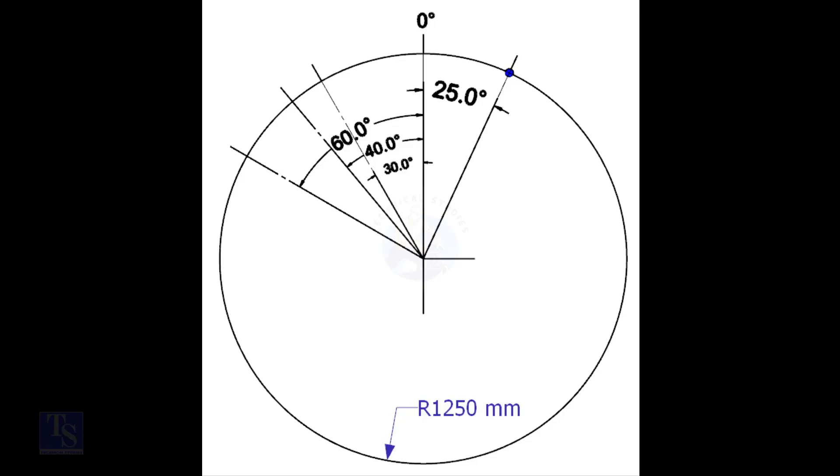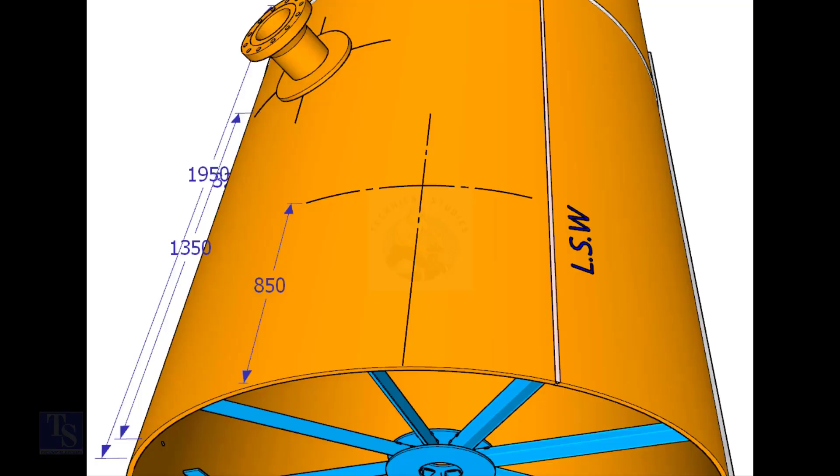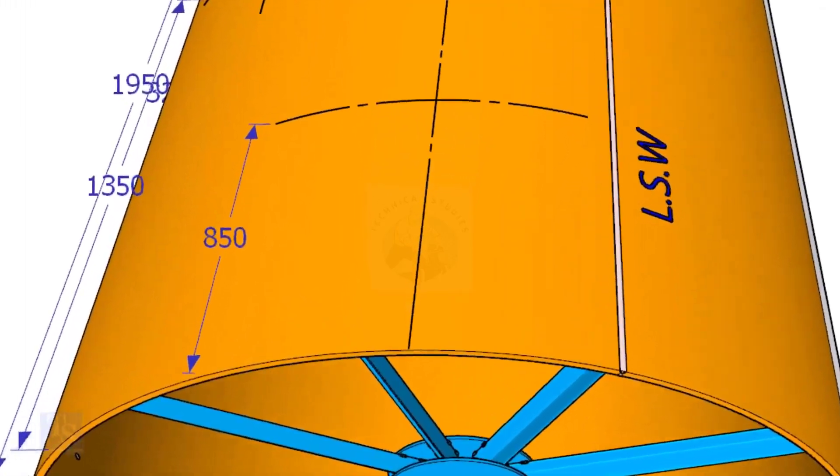Mark the zero degree line as per the drawing. Zero degree is rotated 25 degrees anti-clockwise from the center of the weld joint. We have the angle in degrees and the diameter of the tank. Let us calculate the arc length. Arc length for 25 degrees is equal to outer diameter times 3.142 divided by 360 times 25, which equals 545.5 millimeters. Mark this distance on the end of the shell.